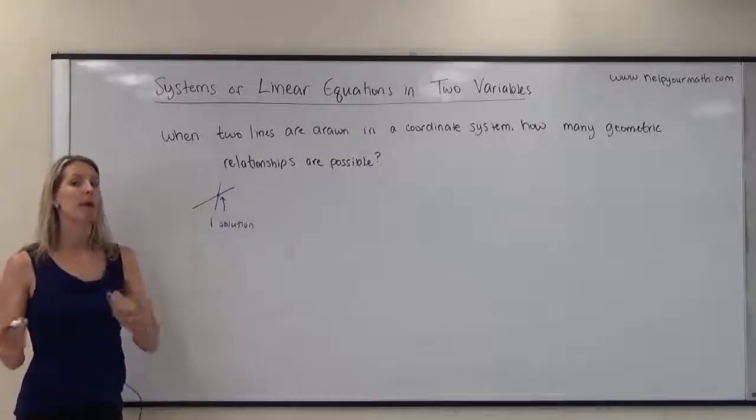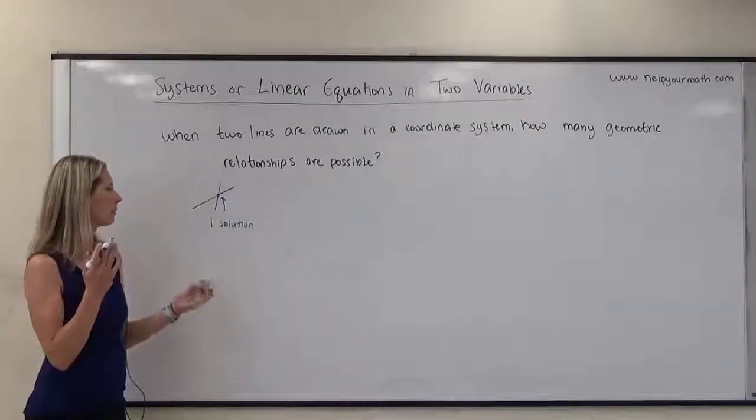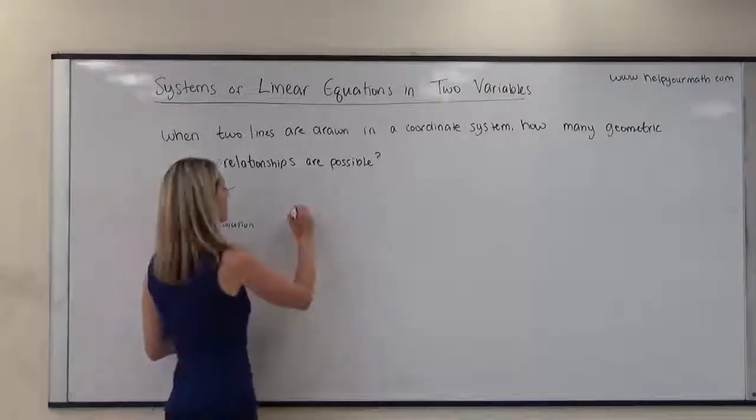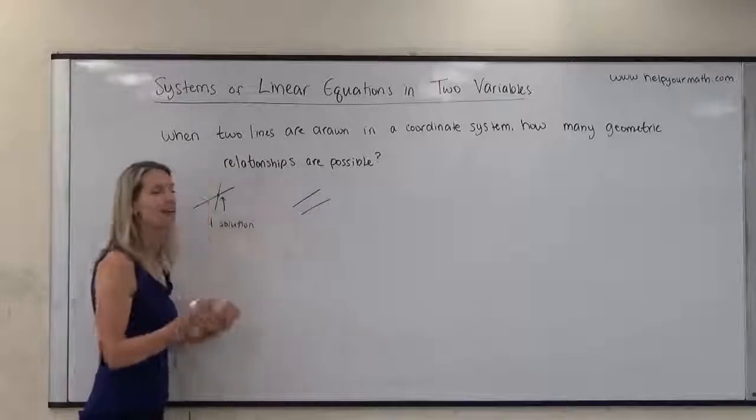Another one that might pop out at you—another way that lines could be drawn in a coordinate plane—they could be parallel to each other. One thing we know about parallel lines is that they don't actually ever intersect.